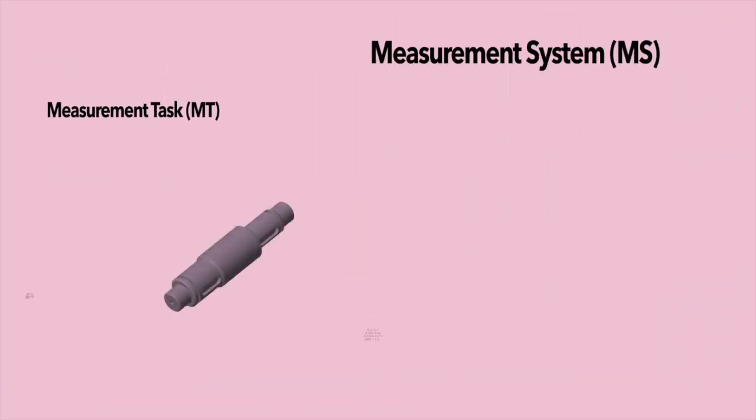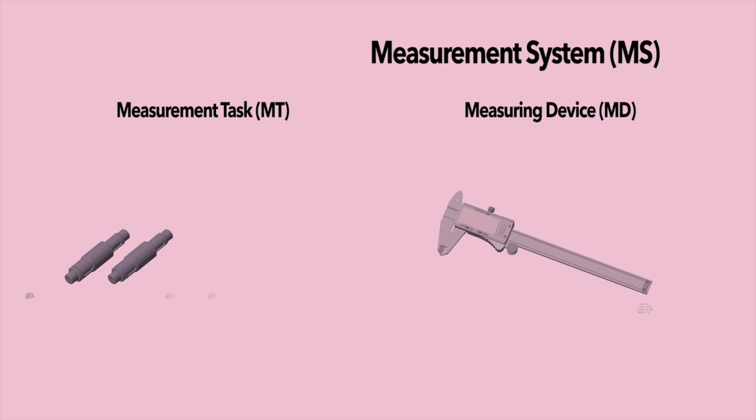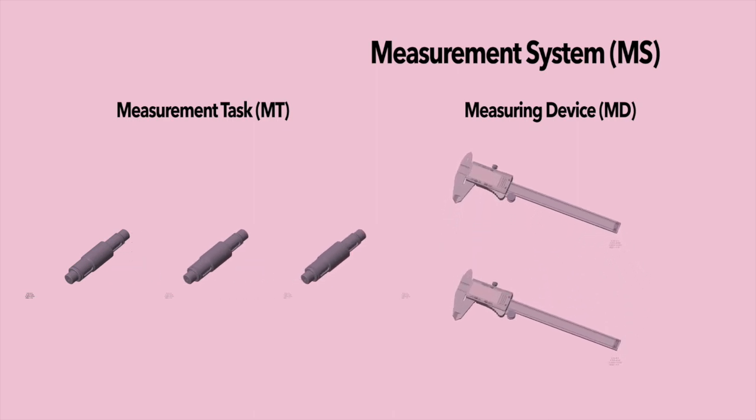The measurement system is usually one measuring device that was chosen to measure the part to execute the measurement task. In some cases, the measurement system can be more than one measurement device.